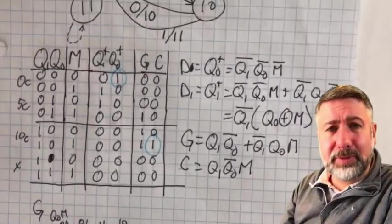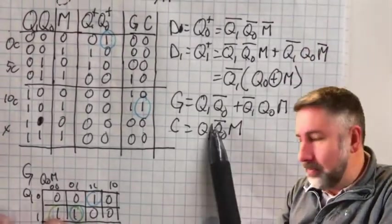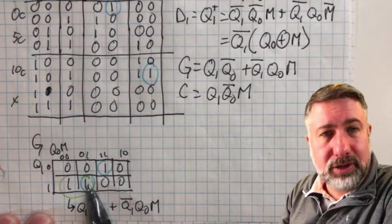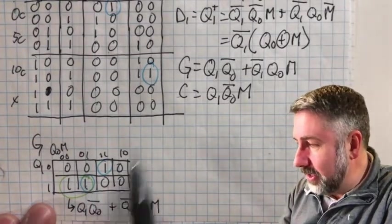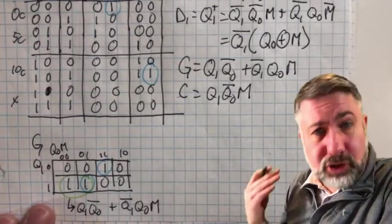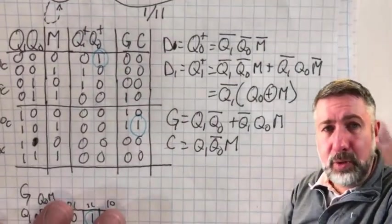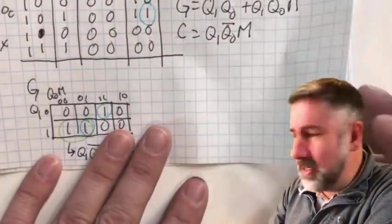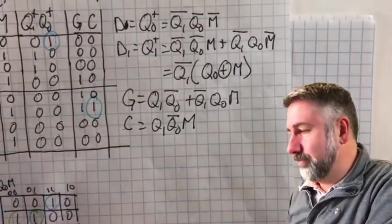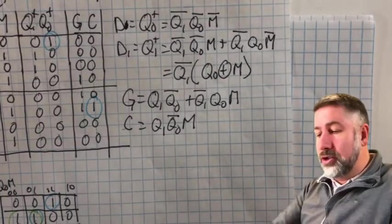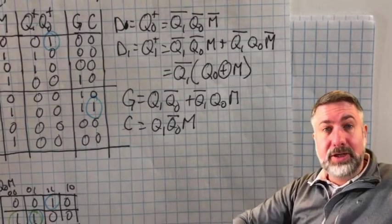The term q1·q0̄·m appears in both the gumball and change equations, suggesting possible sharing, but it won't simplify things significantly. So we'll proceed to draw out the circuit with these four equations: D0, D1, G, and C.